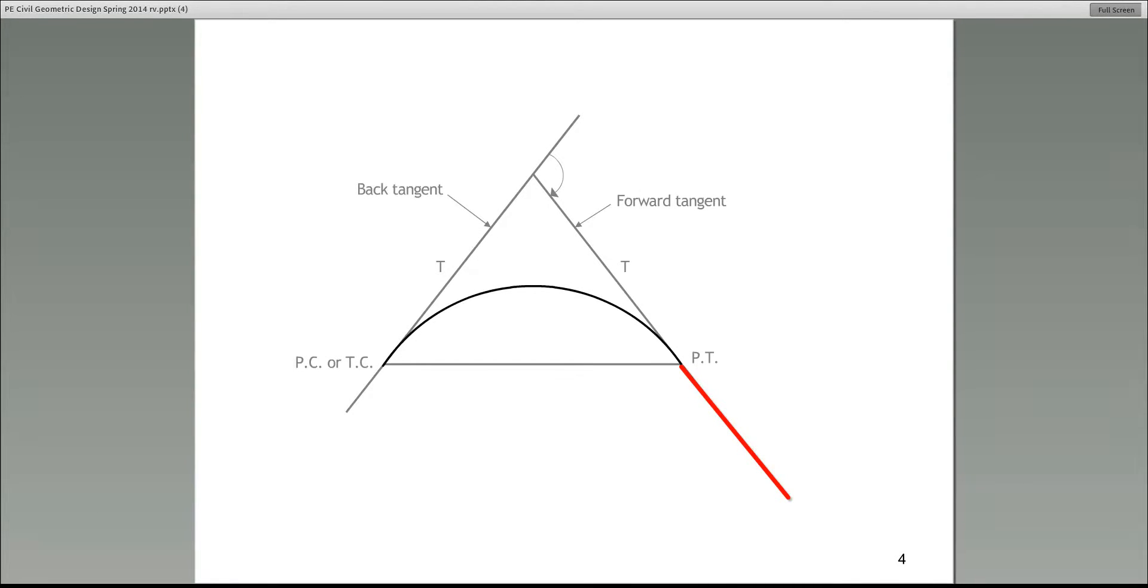When we introduce the topic of horizontal curves, it is that transition from the first alignment to the second alignment. There are certain terminology that we need to learn. One is over here. Please take a look at the left-hand side of the screen. PC. Who can tell me what PC stands for? Point of curvature. Absolutely. That is the point where the back tangent stops and the curve begins. That is the point of curvature.